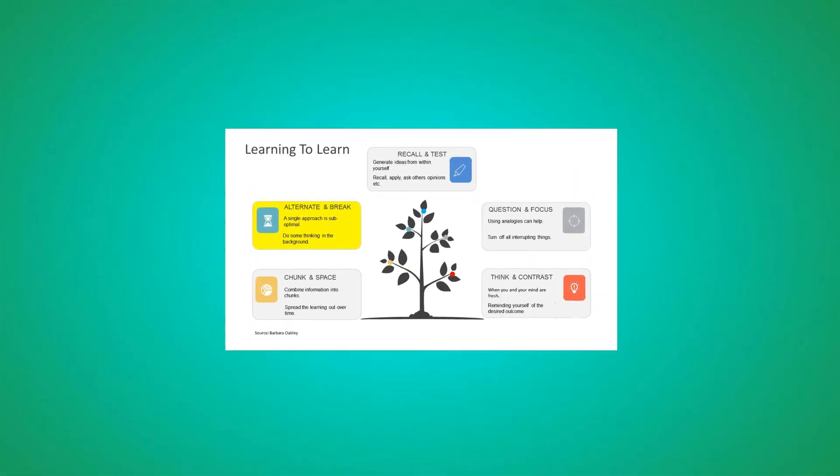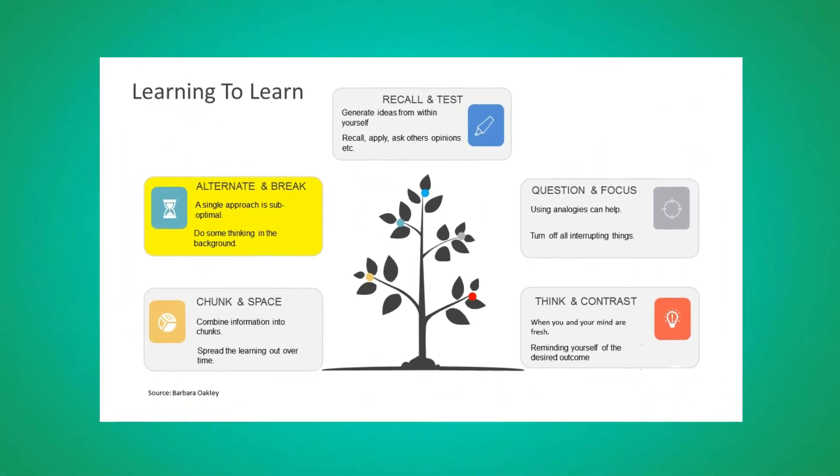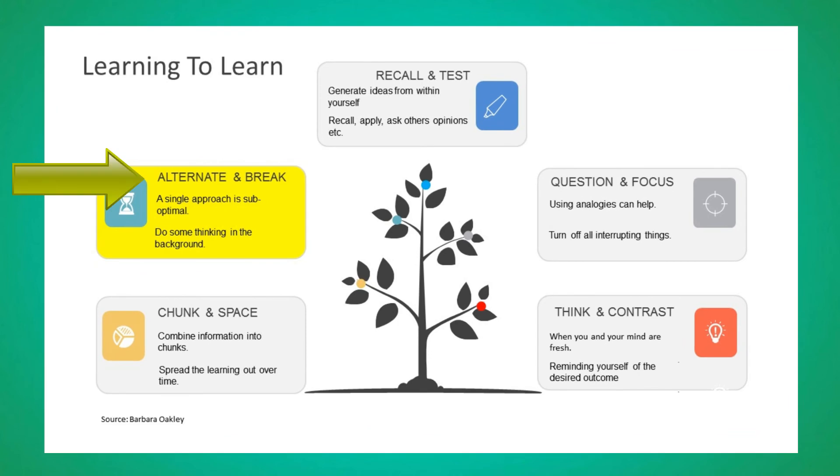Rule number seven is called alternating. Alternating means that you learn to practice different techniques for learning. You should learn to do this because a single approach to learning is suboptimal. To practice alternating, try writing things down, creating pictures, or constructing a quiz on the matter or problem you are addressing.